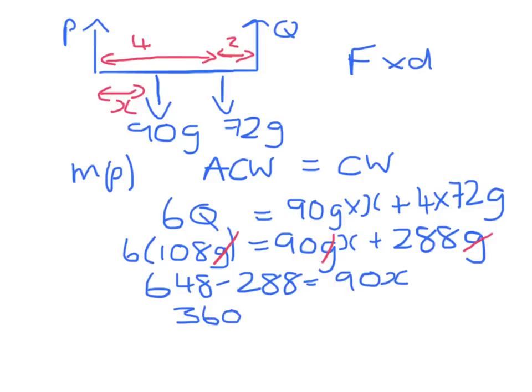360 equals 90x, so x must be 4 meters along the plank.